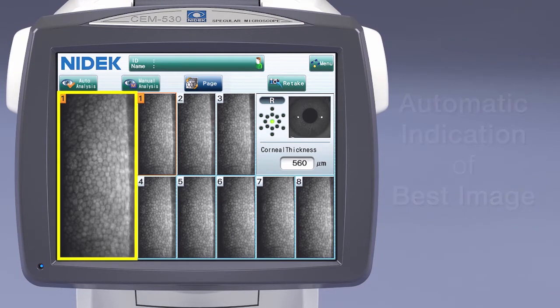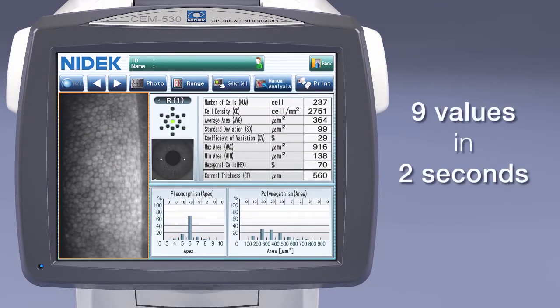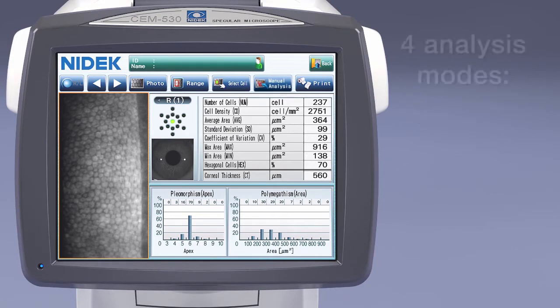Once an image is selected, the CEM530 automatically performs a complete analysis in just 2 seconds that provides 9 essential values.